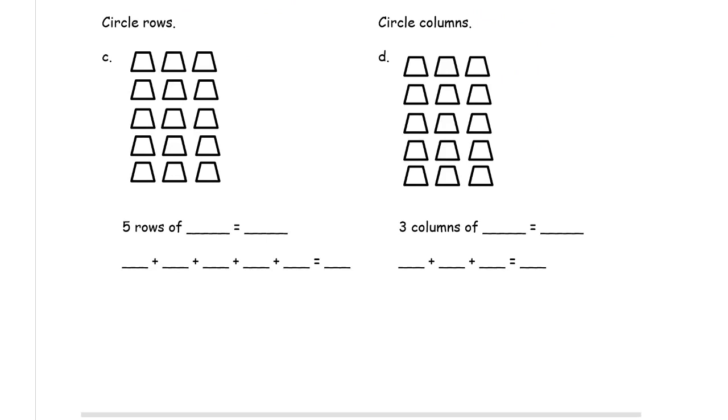Circle rows. That's five rows of three in each row, 15, so that's five threes. Five rows of three, that's five threes. 3 + 3 + 3 + 3 + 3 = 15.